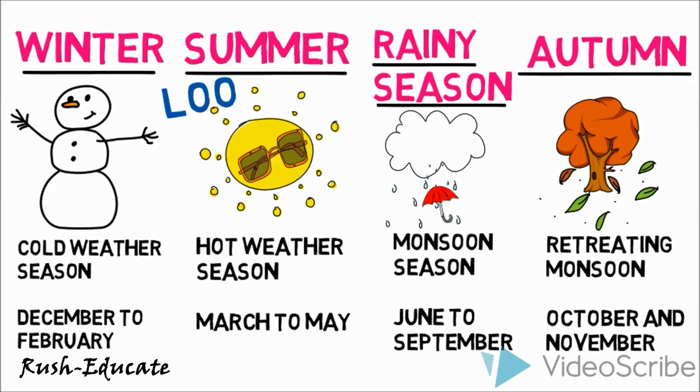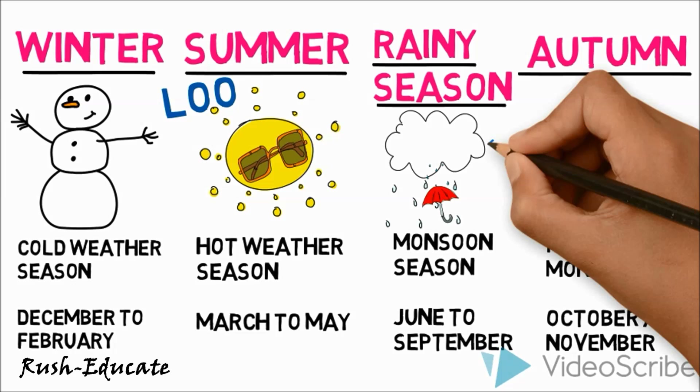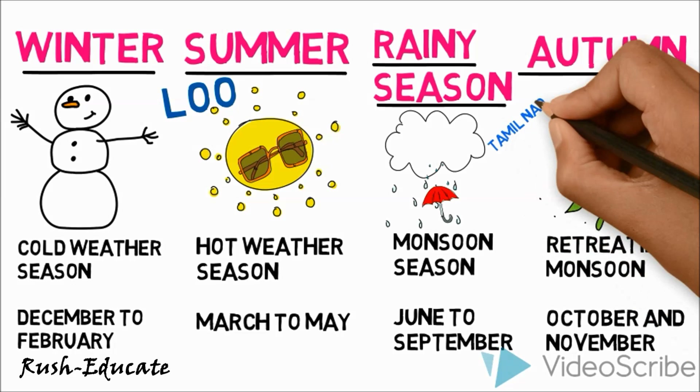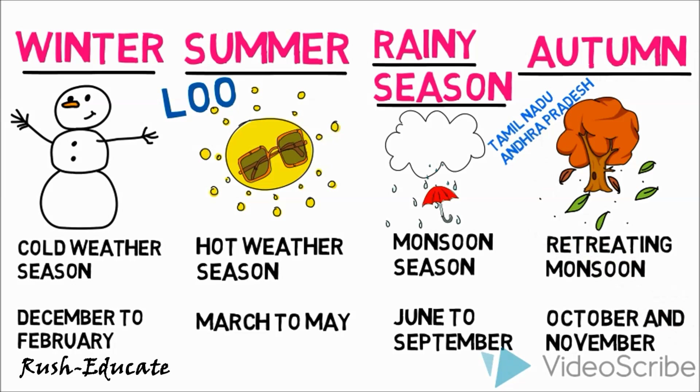Season of retreating monsoons, or autumn: winds move back from the mainland to the Bay of Bengal. The southern parts of India, particularly Tamil Nadu and Andhra Pradesh, receive rainfall in this season.